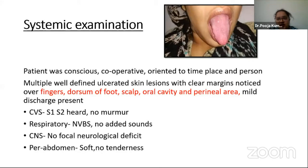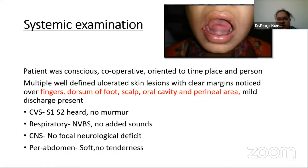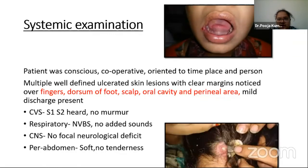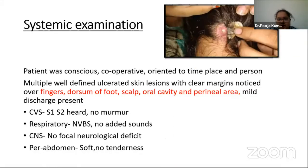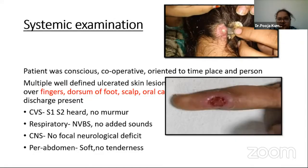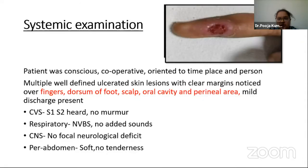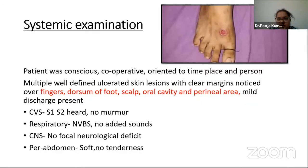This was the clinical picture. She had one oral aphthous ulcer over the tongue and angular stomatitis. Here we can see an ulcerated lesion on the scalp at the back of the neck with crusting over it. This was the lesion over the finger with clear margins, and this was the lesion on the dorsum of the foot.